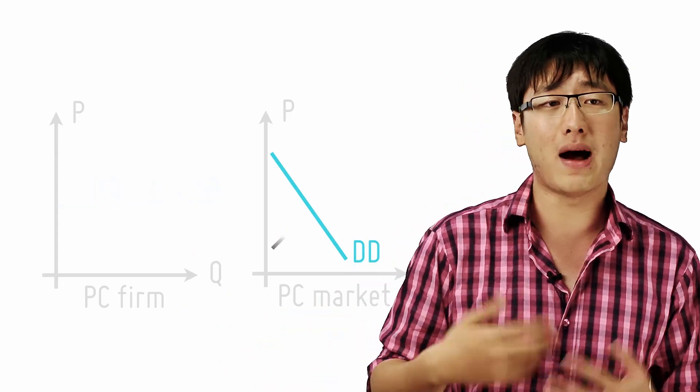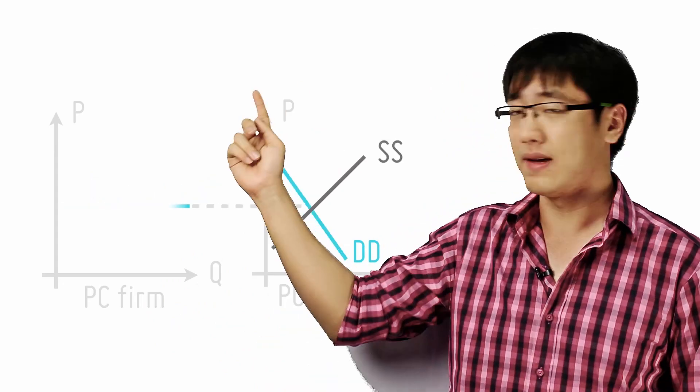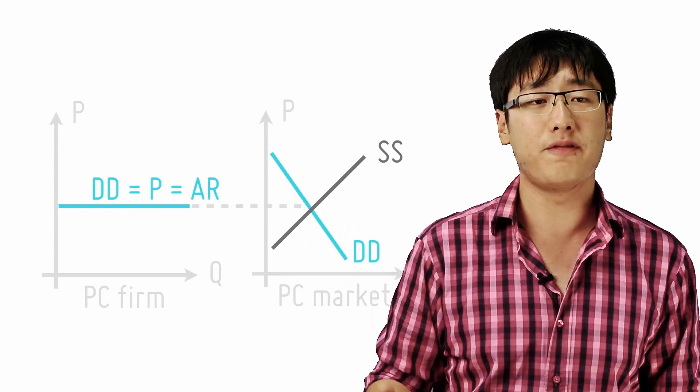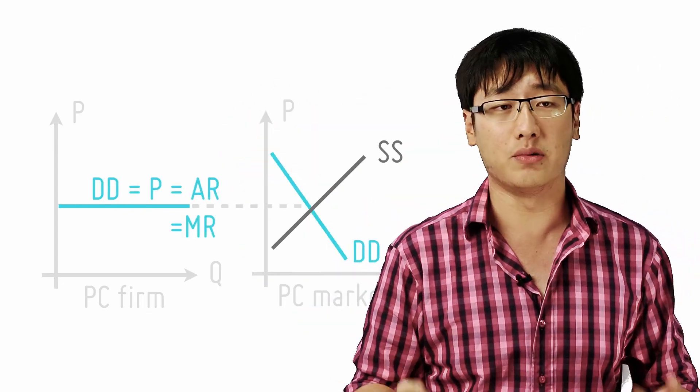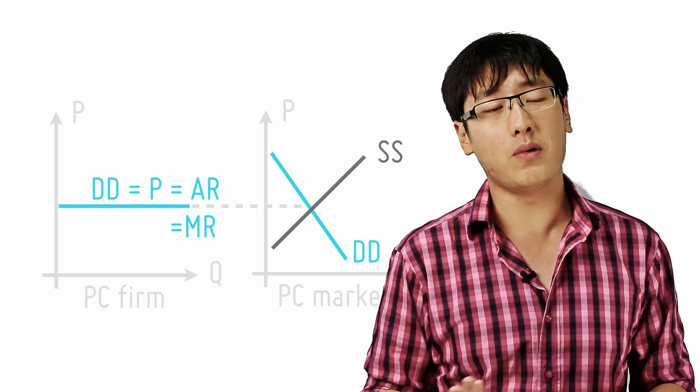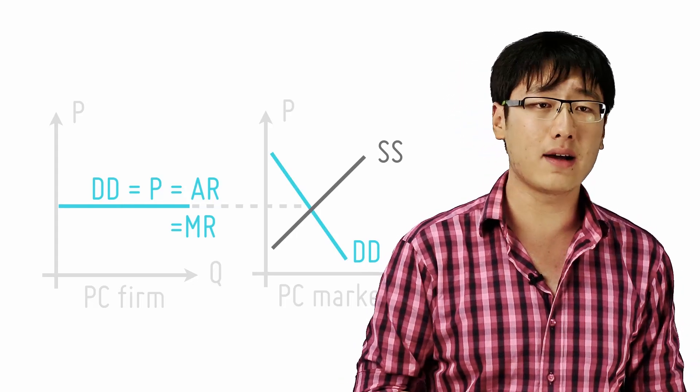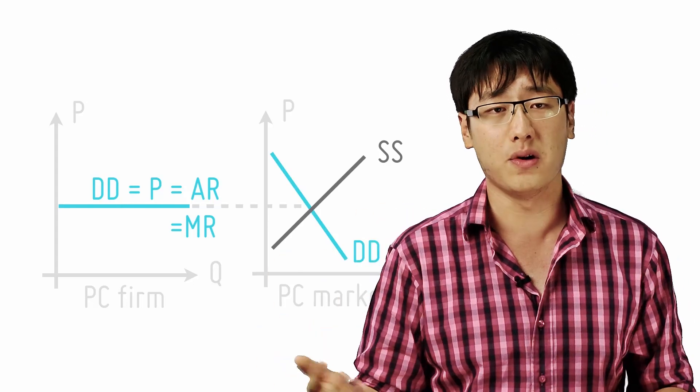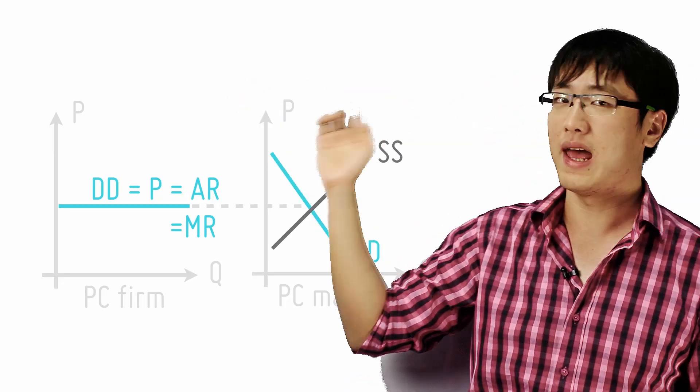Now, the interaction of the market demand and supply sets a price and the competitive firm takes that price and it becomes his horizontal demand curve. Since the firm only earns that amount determined by the market for every additional unit of goods sold, that horizontal line is also the MR.